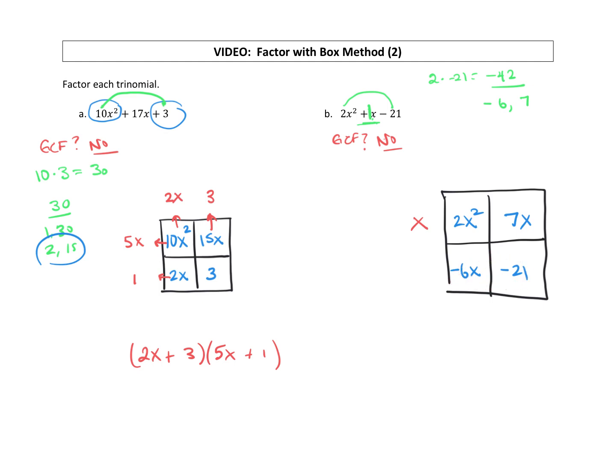Now this next row, do you notice that both of these coefficients are negative? When that happens, that means that your GCF is going to be negative. Now let's focus on 6 and 21. So what's the biggest factor of 6 and 21? That's going to be a 3. Do these two terms have any x's in common? They don't. So just a 3 is our factor right there.